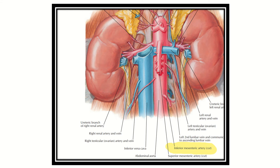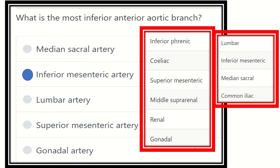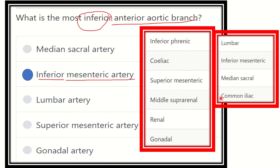To summarize, the abdominal aorta gives: celiac trunk, superior mesenteric artery, and inferior mesenteric artery as anterior branches. The inferior mesenteric artery is the anterior branch but is the most inferiorly placed. So the answer is confirmed: the inferior mesenteric artery is the most inferior anterior aortic branch. The full list of branches includes celiac trunk, superior mesenteric artery, inferior mesenteric artery, middle suprarenal, renal, gonadal, lumbar arteries, median sacral artery, and common iliac arteries.